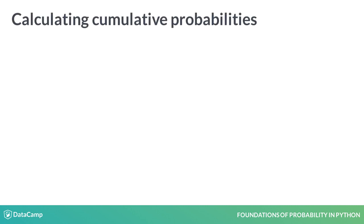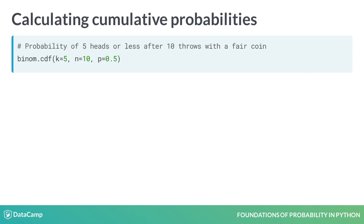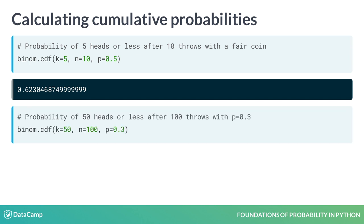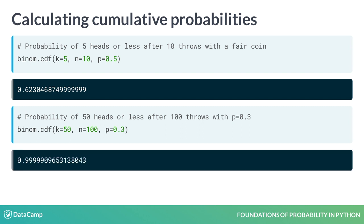If you use binom.cdf with parameters k equals 5, n equals 10, and p equals 0.5, you get the probability of getting heads 5 times or fewer out of 10 flips, which is 62%. The probability of getting heads 50 times or fewer out of 100 flips of a biased coin with 30% probability of getting heads is near 100% — it's almost guaranteed.